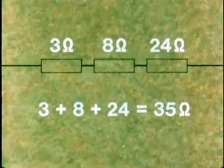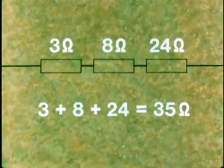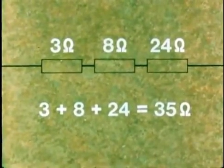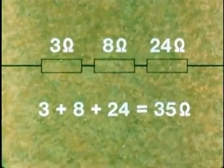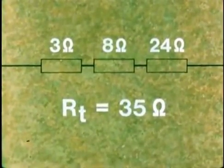To get the combined resistance, resistors connected in series, you simply add the individual values together. So R1 plus R2 plus R3 equals RT equals 35 ohms.